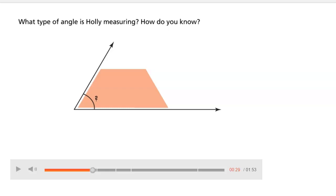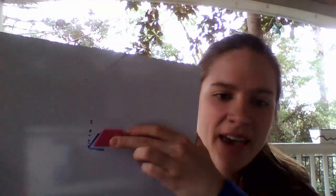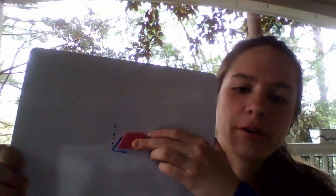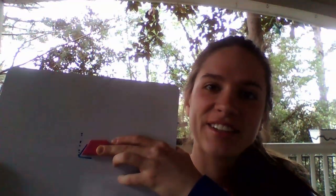So remember our four angles: straight, obtuse, acute, and right angle. What kind of angle is this? As you can tell this is an acute angle because it's less than 90 degrees.